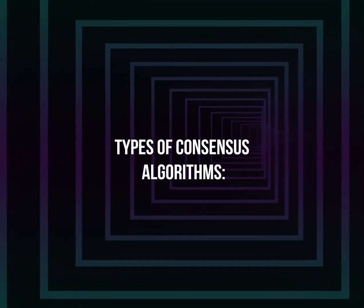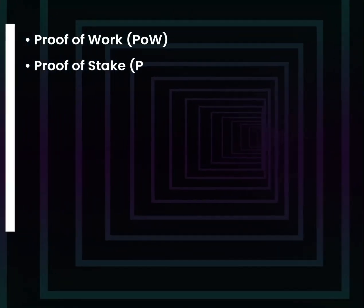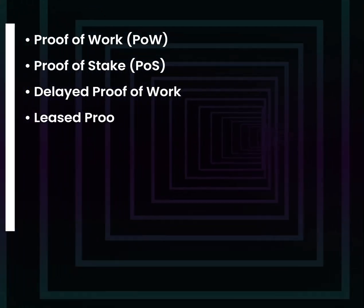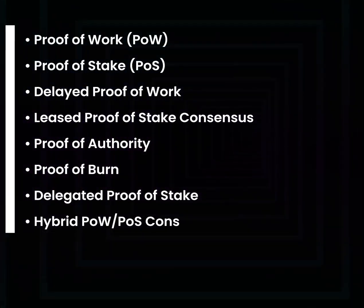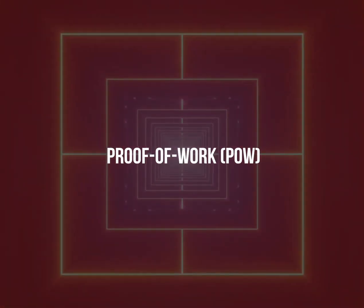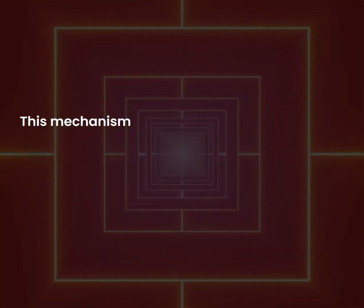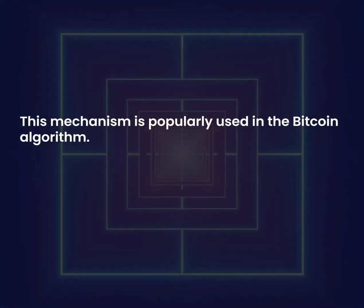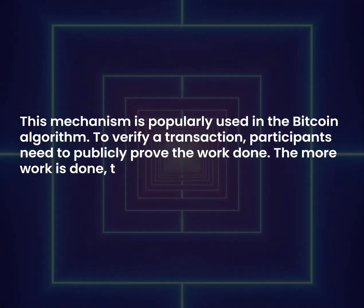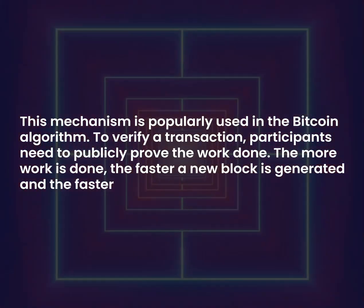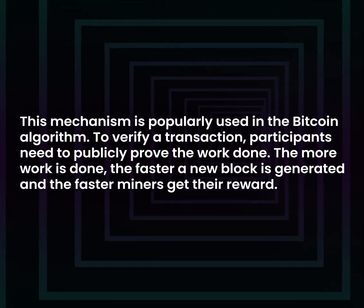Types of consensus algorithms. This mechanism is popularly used in the Bitcoin algorithm. To verify a transaction, participants need to publicly prove the work done. The more work is done, the faster a new block is generated and the faster miners get their reward.